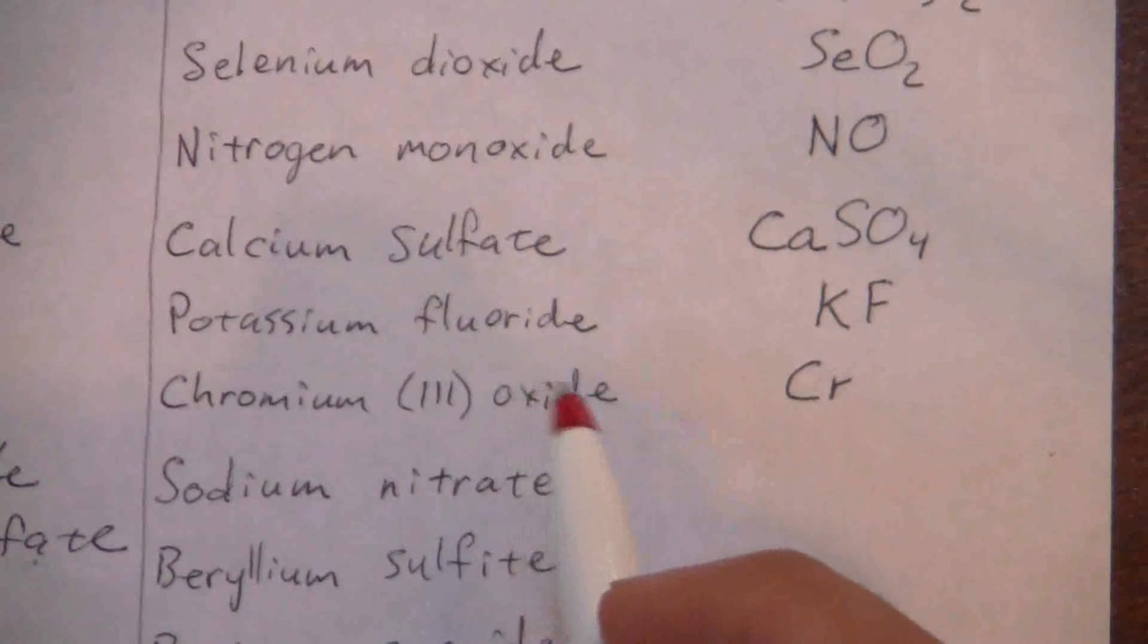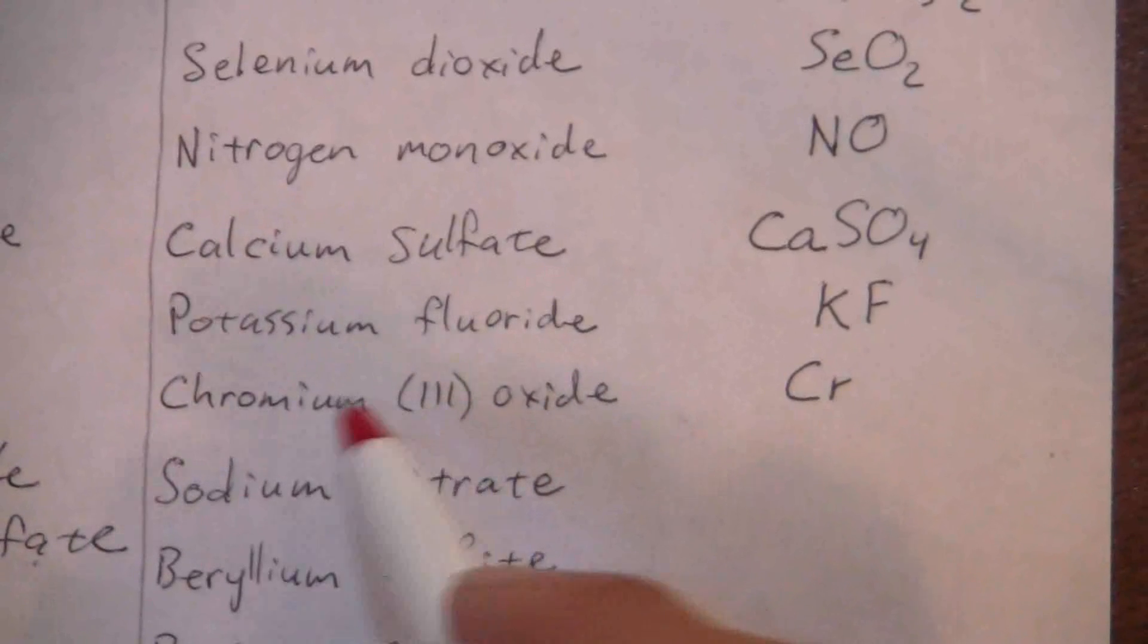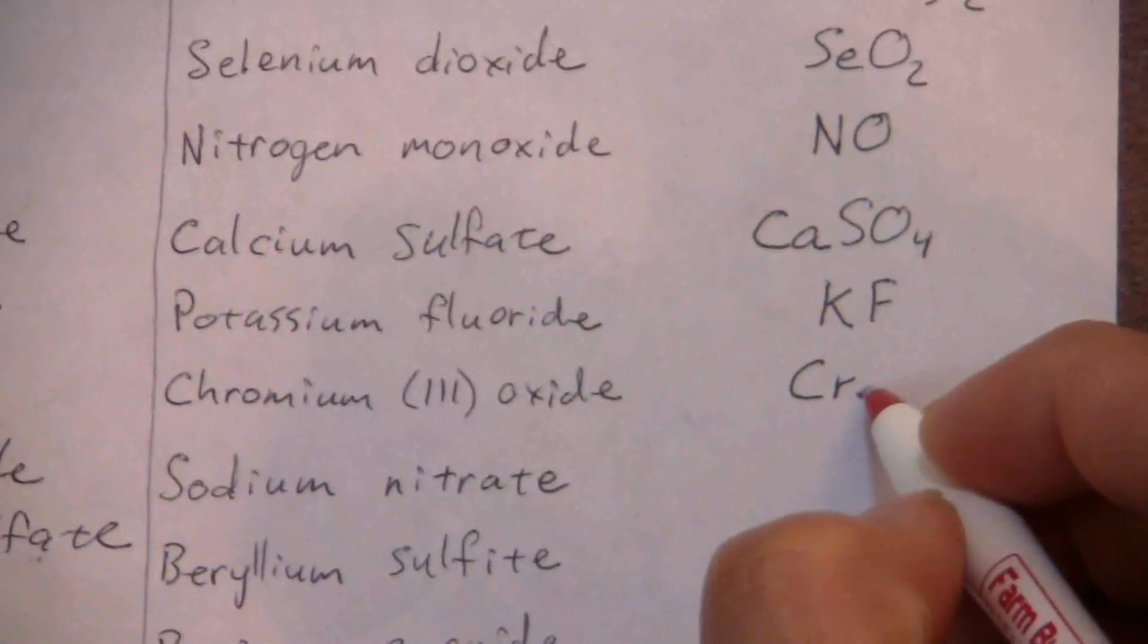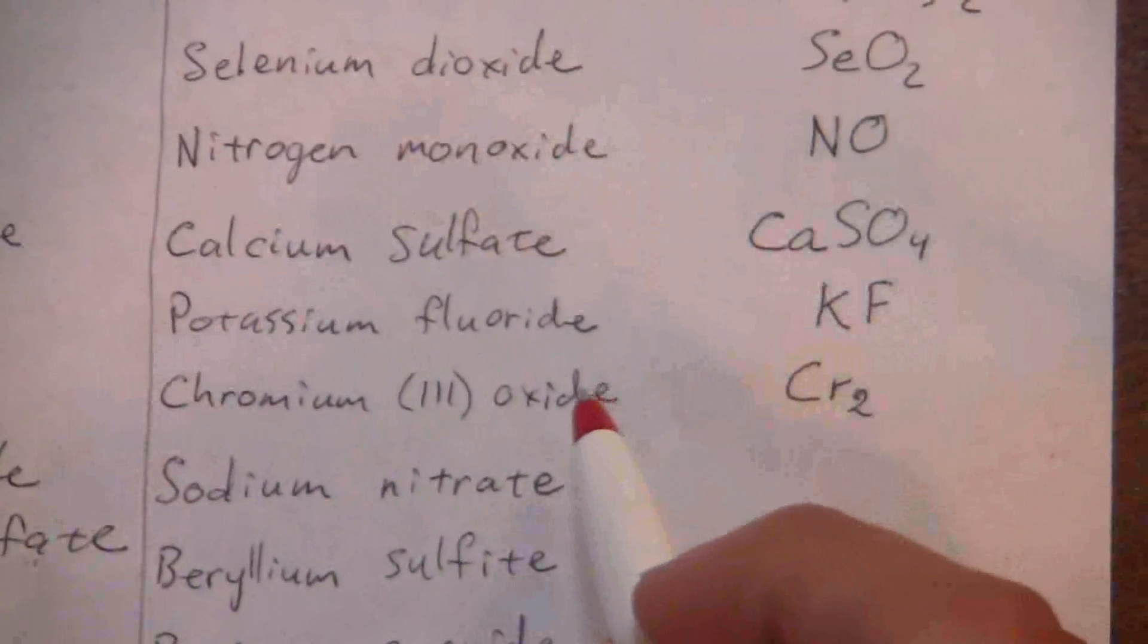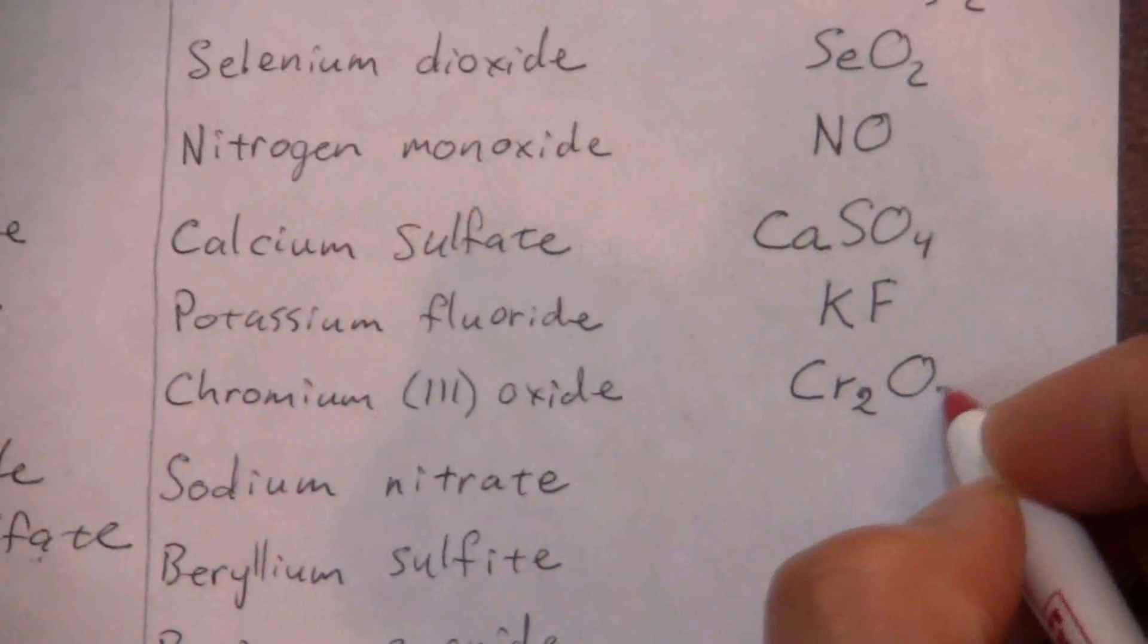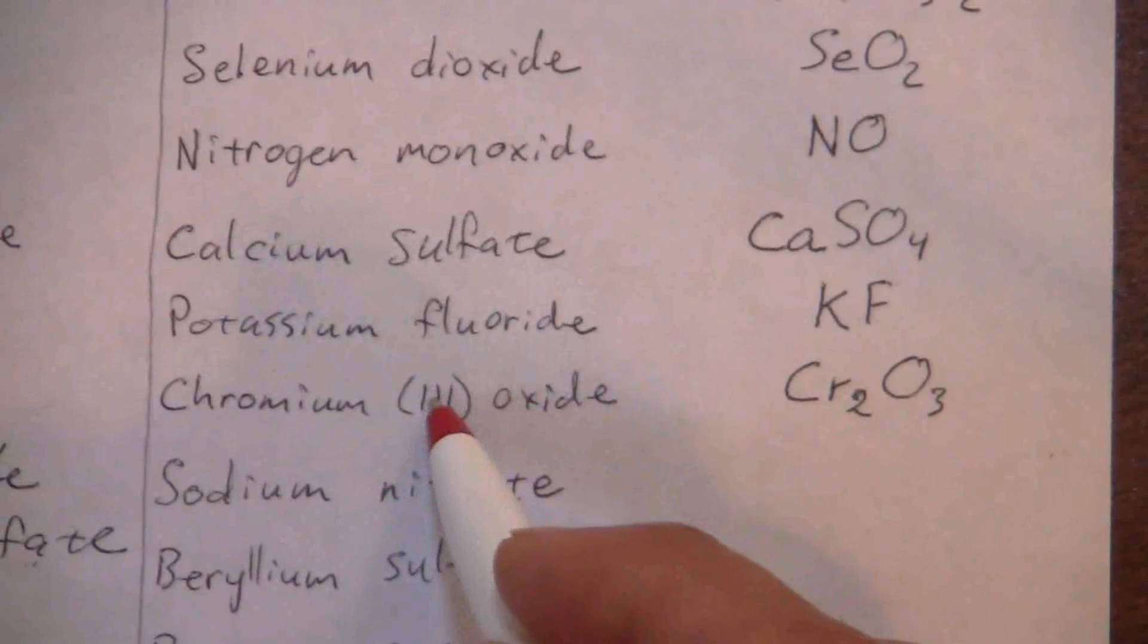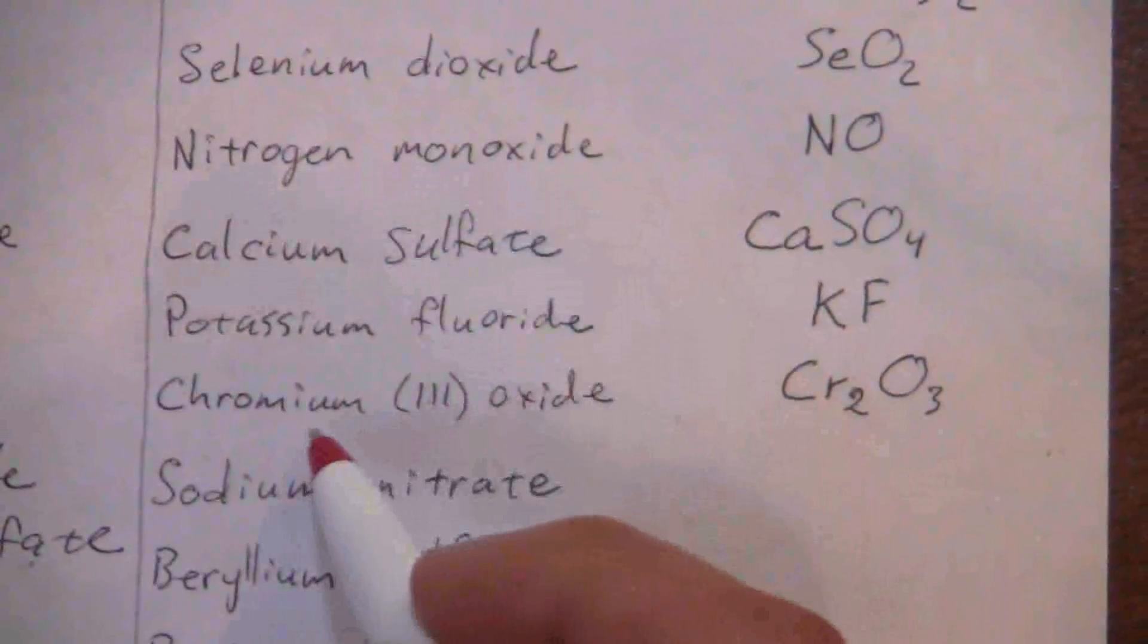So how do I have to put those together? I kind of find the lowest common multiple between two and three, and that would be six. So I need a positive six charge from the chromium - I get that from having two of those - and a negative six from the oxygen I get from having three. So negative two, positive three - the three goes to the oxygen, the two goes to the chromium: Cr2O3.